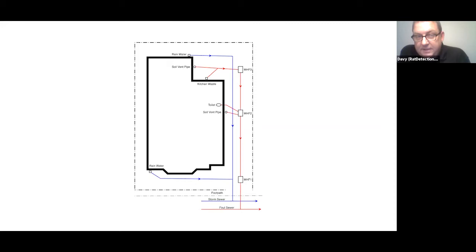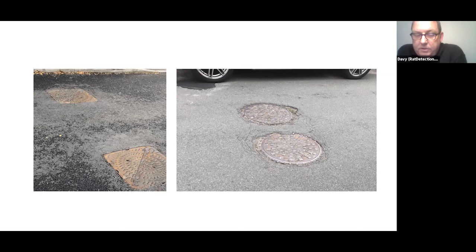If there are no manholes, you have to make access, excavate, and get into that system before you can say with confidence that the rat infestation is not due to a defective drain. A simple trick is to look in the road: if you see two sets of covers side by side, this usually - not always - indicates two separate drainage systems, one for rainwater and one for foul.